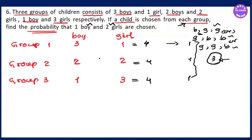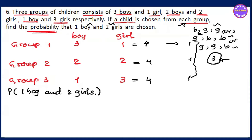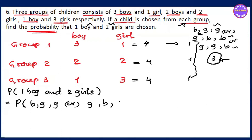The probability of one boy and two girls. We are going to use the notation here: B, G, G. Or we can use G, B, G.